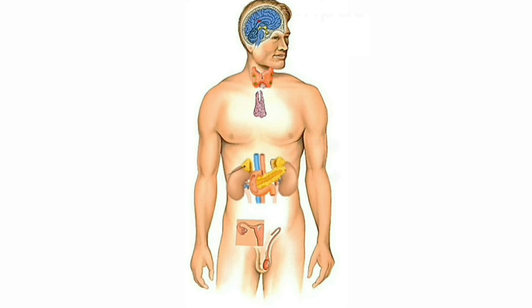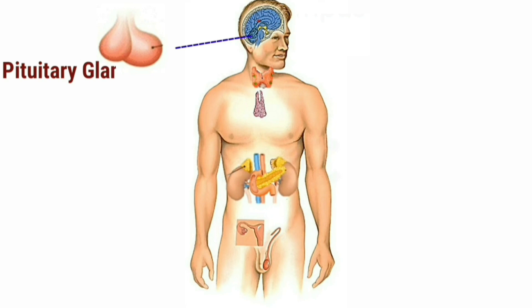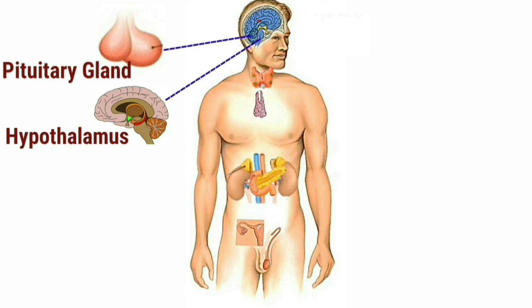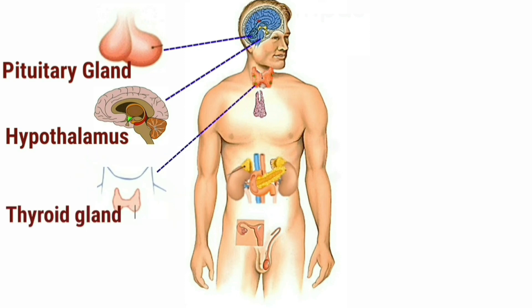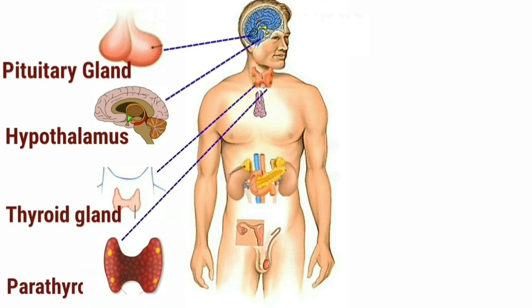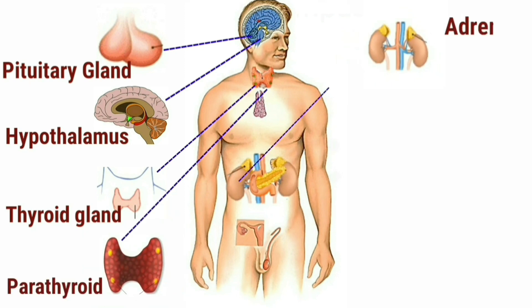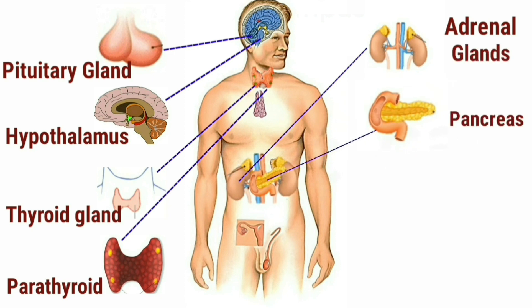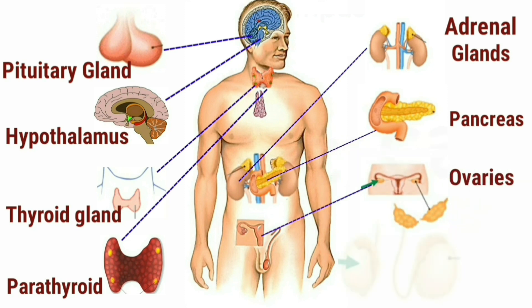I am going to show you different kinds of glands. The first is the pituitary gland, second hypothalamus gland, third thyroid gland, fourth parathyroid gland, fifth adrenal gland, sixth pancreas, and seventh ovaries and testes, which are related to the gonads. I am going to discuss each gland's function and structure.